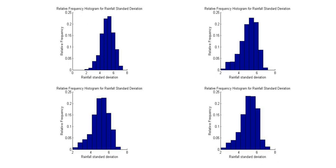In statistics, the plug-in principle is the method of estimation of functionals of a population distribution by evaluating the same functionals at the empirical distribution based on a sample.